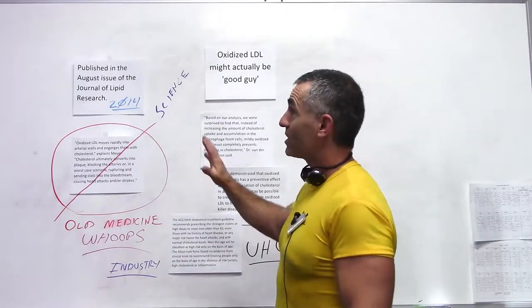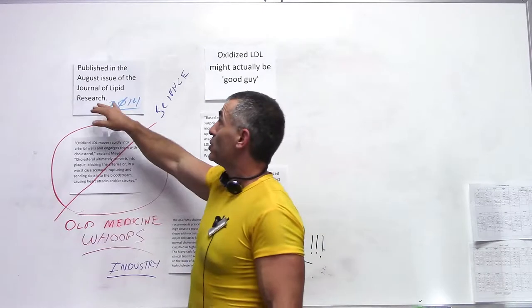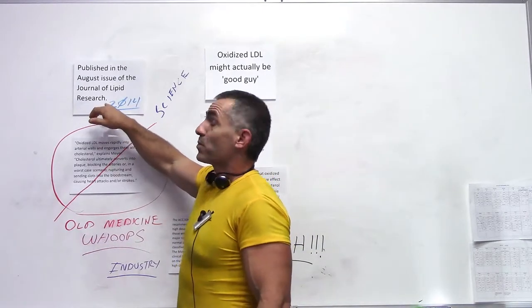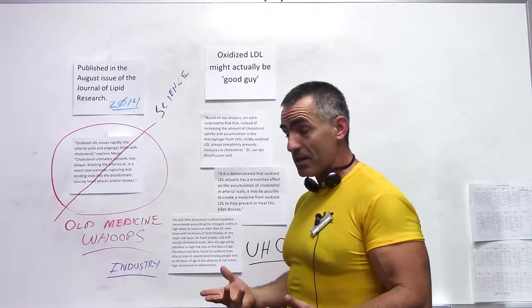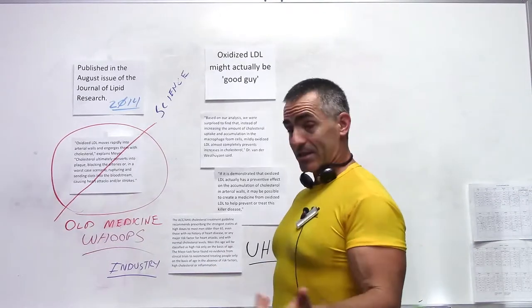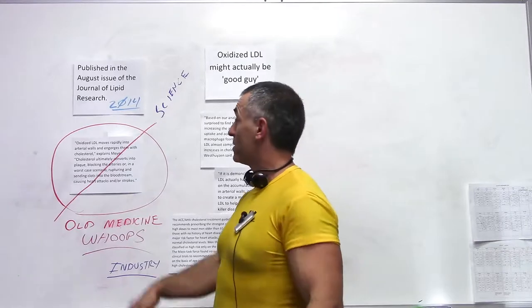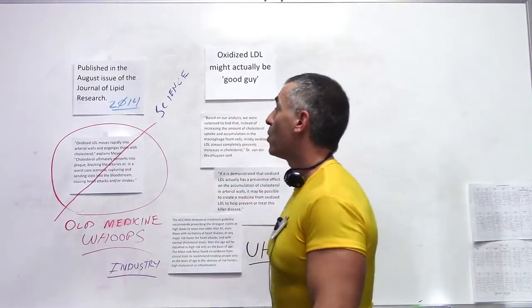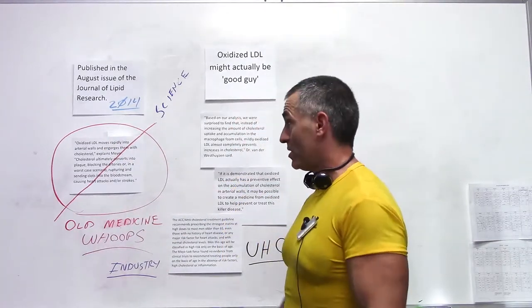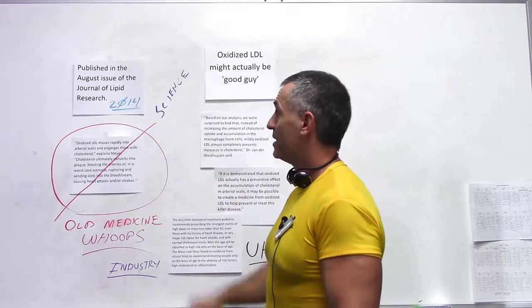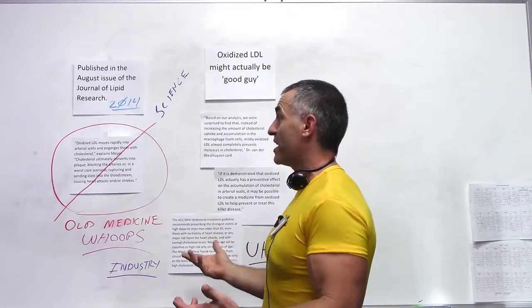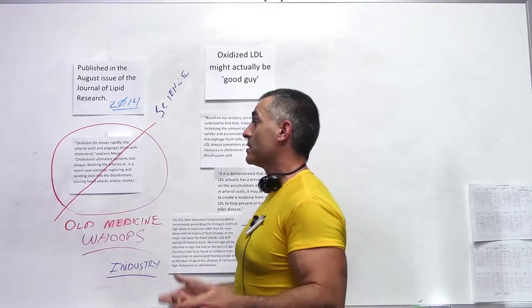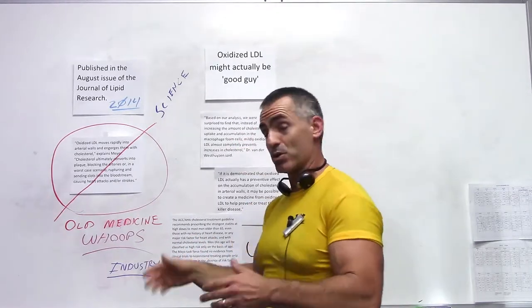And this article was published in the August issue of the Journal of Lipid Research in 2014. Now normally what happens, or what we believe, is that oxidized LDL moves rapidly into the arterial walls and engorges them with cholesterol, explained Meyer, who is the researcher. Cholesterol ultimately converts into plaque, blocking the arteries or worst case scenario, rupturing and sending clots into the bloodstream, causing heart attacks and strokes.